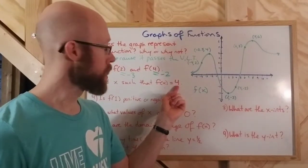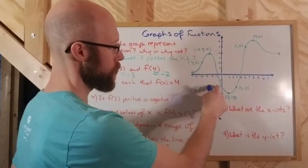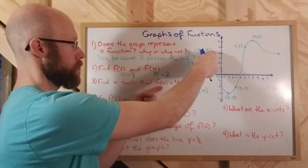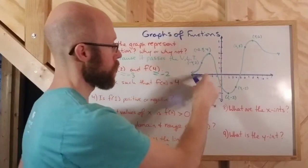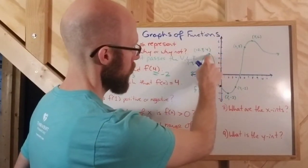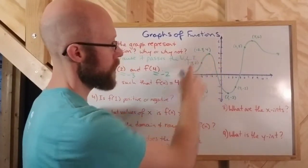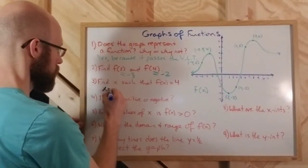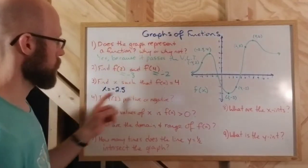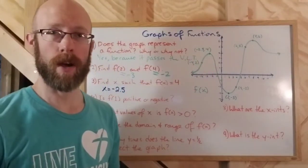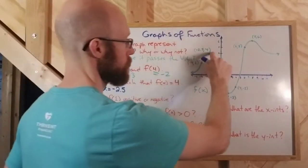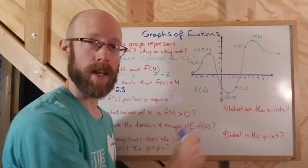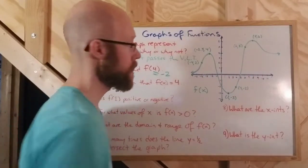There's one over on the left: the point negative 2.5 comma 4 is on the graph, so x equals negative 2.5. But there's a second one over to the right as well. I don't have the point designated on the graph, so we're going to have to estimate where that's at. If I come up to 4 and over to the graph and then down, we're hitting right around 5.5.